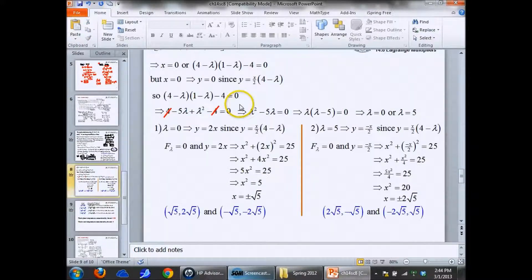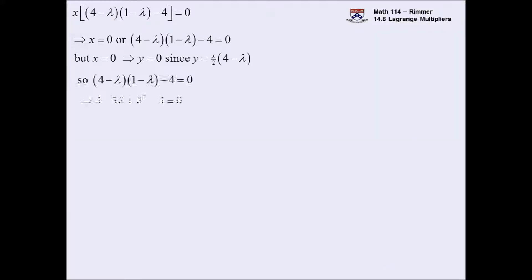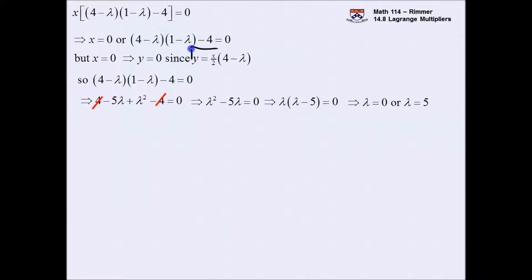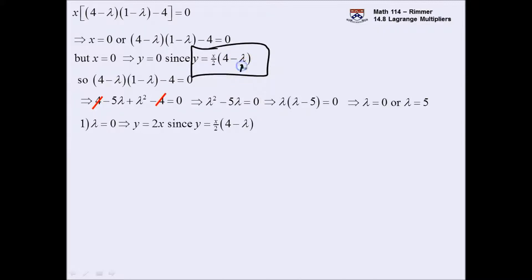So lambda is zero or lambda is five. Remember the connection: y = (x/2)(4 - λ). If λ = 0, that immediately gives y = 2x. That's your relationship between y and x. It happens to be the same one as from last time on the quiz.